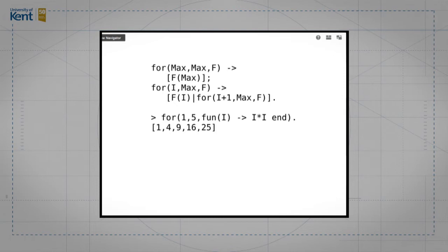If we say for of 1, 5, fun of I is I times I, and it returns the list 1, 4, 9, 16, 25. That's pretty much like a for loop that you would find in any conventional programming language. But that's a sequential abstraction.